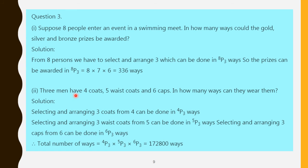Similarly, 3 men have 4 coats, 5 waistcoats, and 6 caps. In how many ways can they wear them? There are 4 coats, so 4P3 for coats. Next, 5 waistcoats: 5P3, because we want to select and arrange 3 waistcoats. There are 6 caps: select and arrange 3 caps — 6P3. Multiply: 4P3 × 5P3 × 6P3, and the final answer is 172,800.